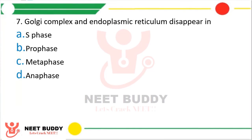Question 7: Golgi complex and endoplasmic reticulum disappear in? Option A: S phase. Option B: Prophase. Option C: Metaphase. Option D: Anaphase. The correct answer is Option B, prophase, which is the first phase of M phase. All the cell organelles like the Golgi complexes, endoplasmic reticulum, nuclear envelope, and nucleolus — all these disappear in prophase.